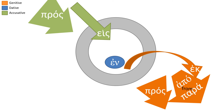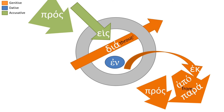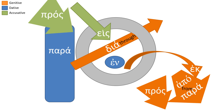Dia, in the genitive, means 'through' — but it goes all the way through and comes out the other side. Para, in the dative, is 'beside,' 'in the presence of.' Don't you want the one you're dating to be in your presence and beside you?